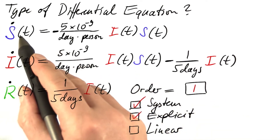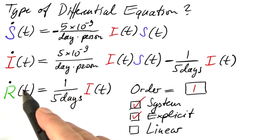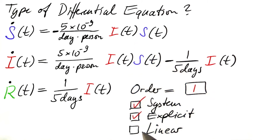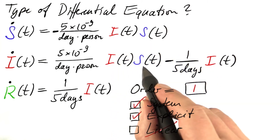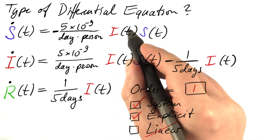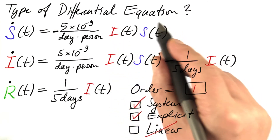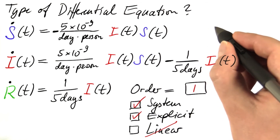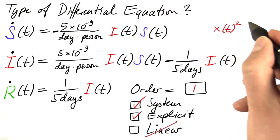It's explicit. The highest derivative appears alone on one side and nowhere else. And, this may be a surprise, it's not linear. The problem is this term and this term as well. We are multiplying one component of the solution by another component of the solution. This is something like x of t squared.